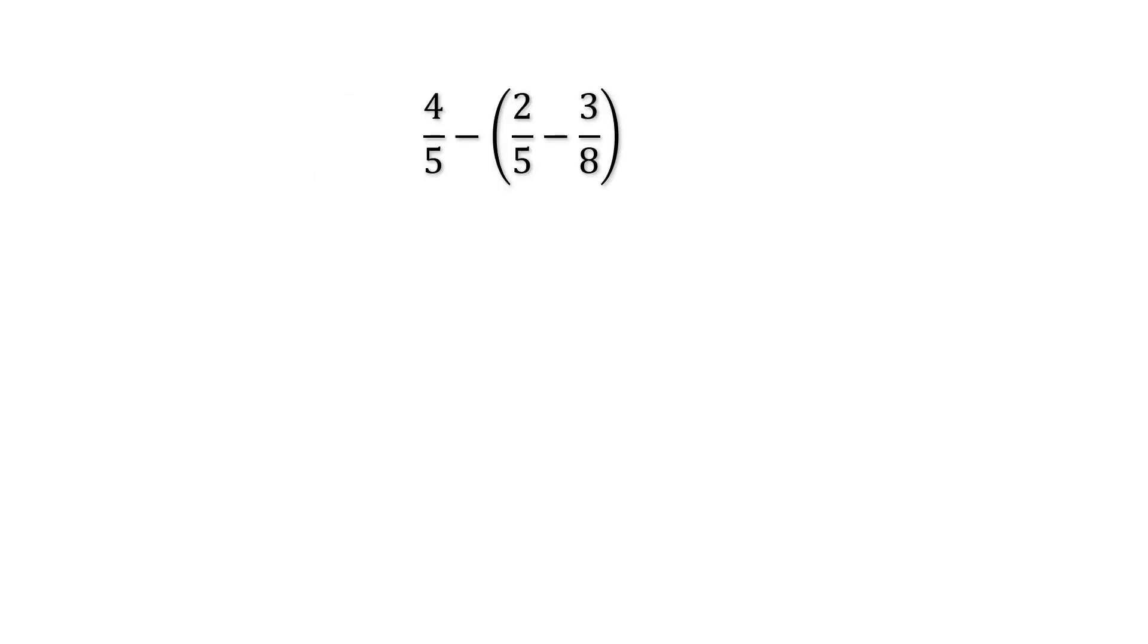So let us just do the subtraction inside the bracket. For the subtraction we will find out the LCM of 5 and 8 that will be equal to 40. We'll just simply multiply 5 and 8 as 5 and 8 have no common factors. So we cannot do any factorization.